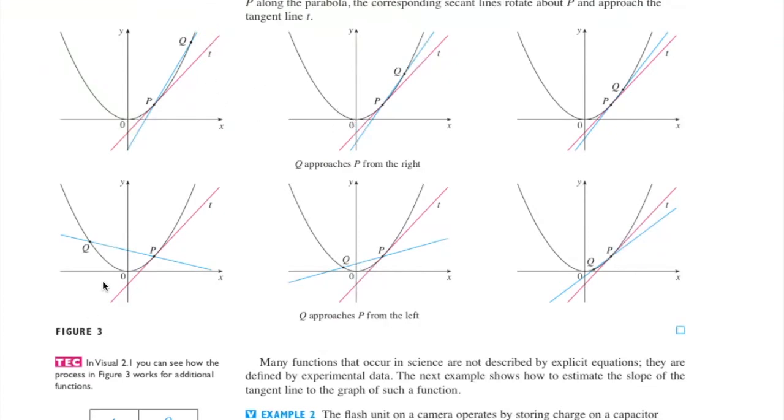Usually we do this from both sides, from the right and also from the left, to make sure that they're the same. Just to check that both sides get the same value for the tangent line. Because if they're not the same, then it doesn't exist.